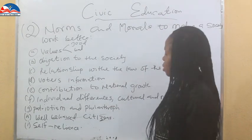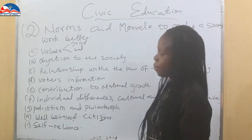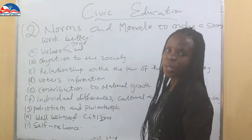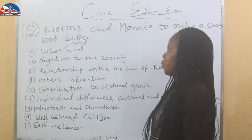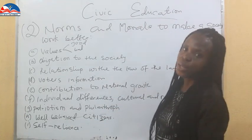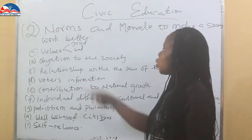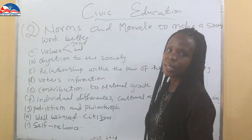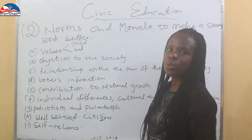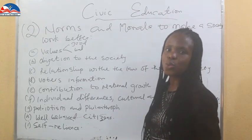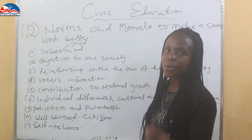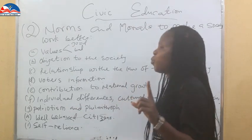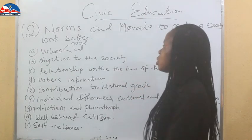Let's take them one after the other. What is value as it relates to norms? Value is the act of good or bad — what is that good thing I can do to add to the betterment of society, or what will I do to destabilize the society? What value system are you going to put into the betterment of the society? That is one of the things that makes a society better — putting in good values.